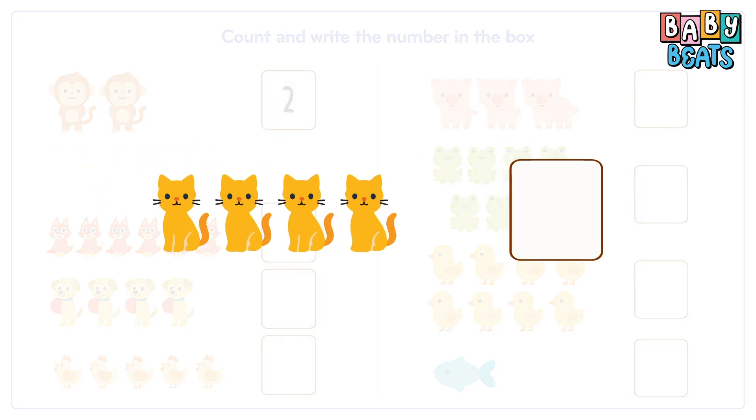Now look at the cats. Count with me. One, two, three, four. That makes four cats. Write number four.